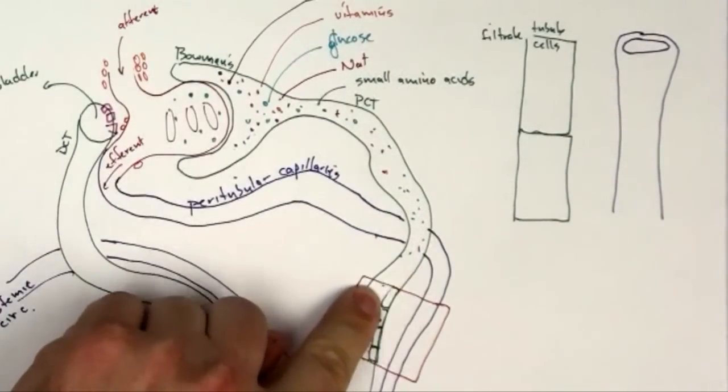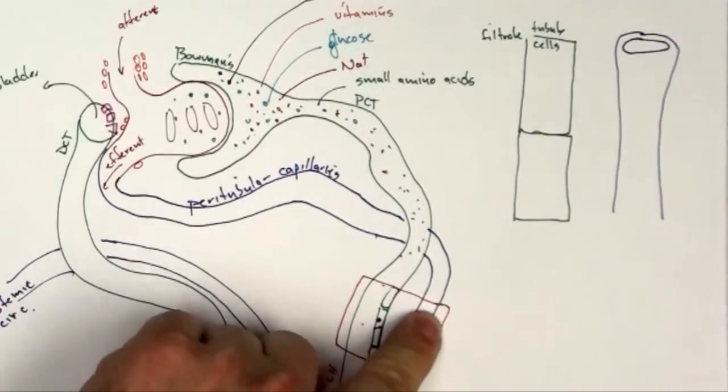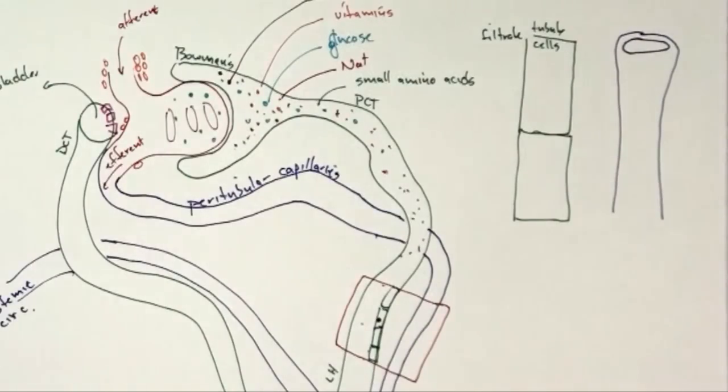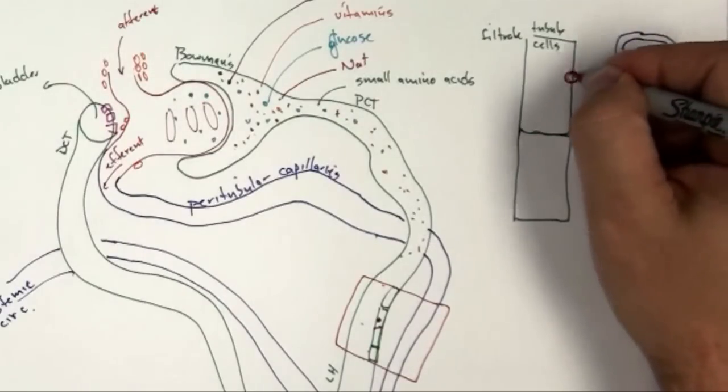Now we've got all these things in our tubule, and we want to get them back into the blood, so what's the process by which we do that? The first thing I want to talk about is, the first step is, we've got a sodium potassium ATPase.